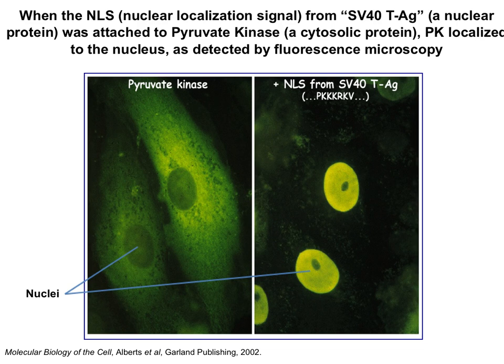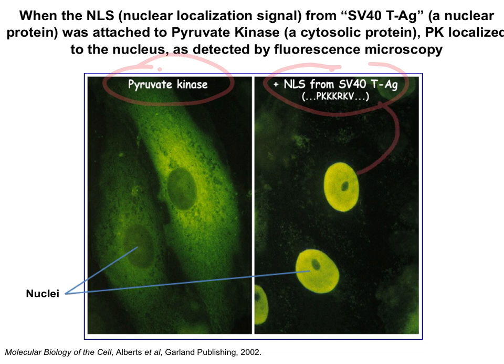Here's what a nuclear localization signal does. If I take something like pyruvate kinase — which is supposed to be in the cytoplasm — but I attach to it a signal with those lysines and arginines, that basic set of amino acids, it says: I'm supposed to go into the nucleus. So here's what nuclear localization looks like: cytoplasmic distribution all out here, not in the nucleus. I put a nuclear localization signal on it, and now it goes into the nucleus. It won't be functional there, but I have tricked it into thinking that's where it belongs by putting a nuclear localization signal on it.